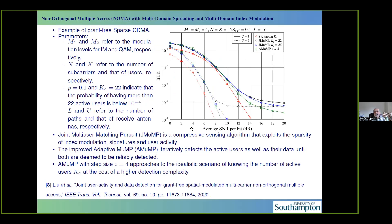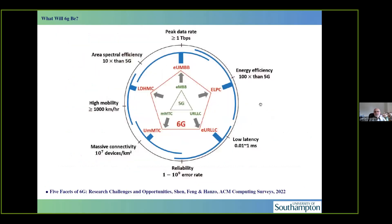There are bit error ratio versus signal-to-noise ratio trade-offs to be had. For example, with one or two antennas, we can gain maybe four or five dBs by increasing the number of antennas. There would be a potential residual bit error ratio, which can readily be cleaned up with the aid of sophisticated state-of-the-art channel coding schemes. But there are huge different trade-offs in this context.